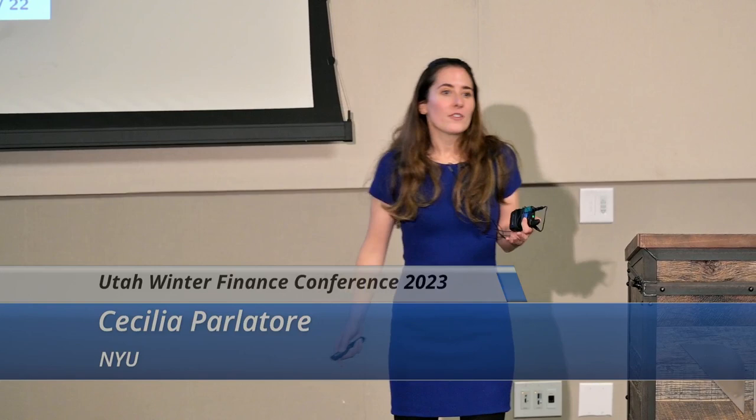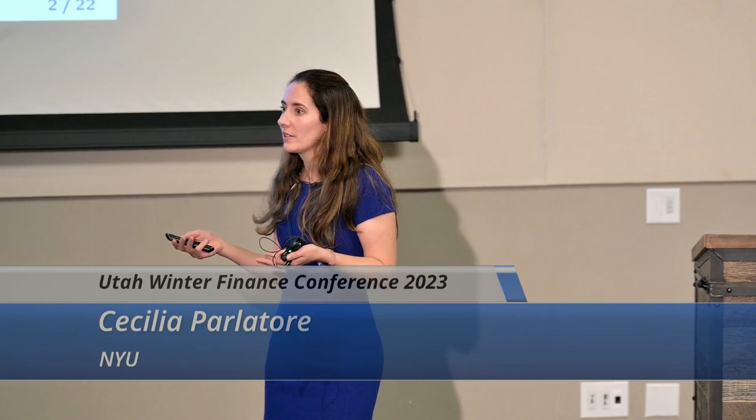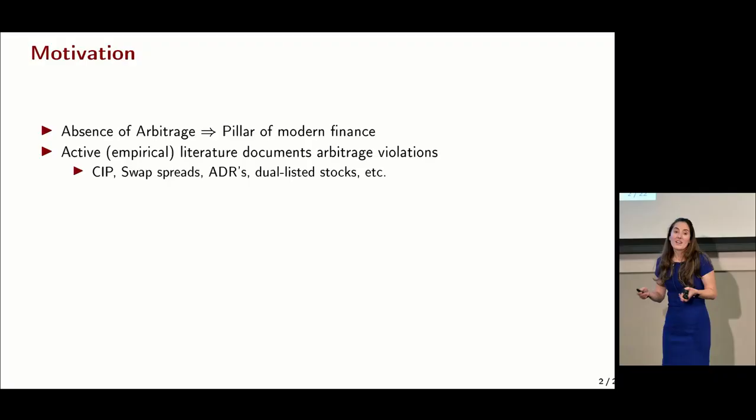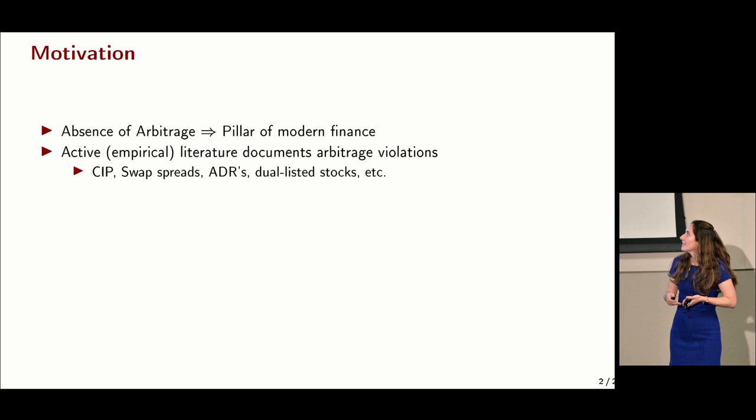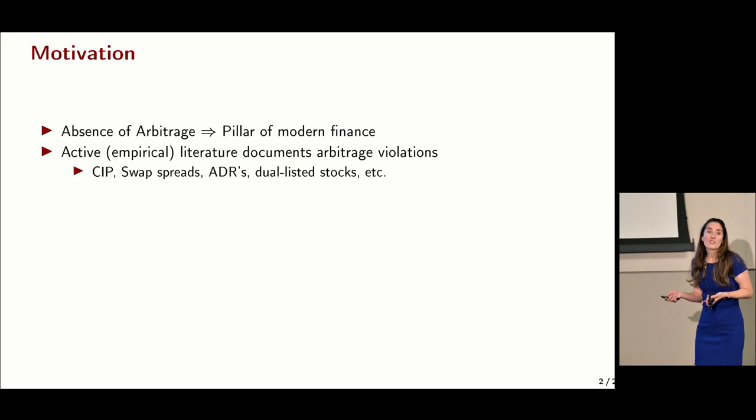We start with the observation that much of modern finance theory makes the assumption that there's a lack of arbitrage opportunities. But in practice, we observe a lot of deviation from the law of one price. There's a very active empirical literature that documents deviations from CIP, arbitrage opportunities in swap spreads, in ADRs, in dual listed stocks, and in many other asset classes.